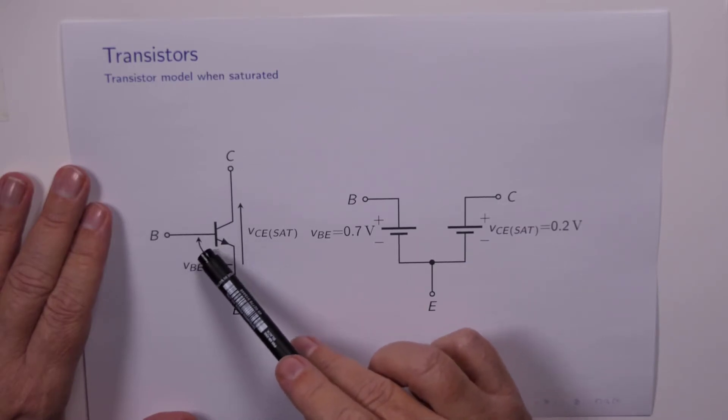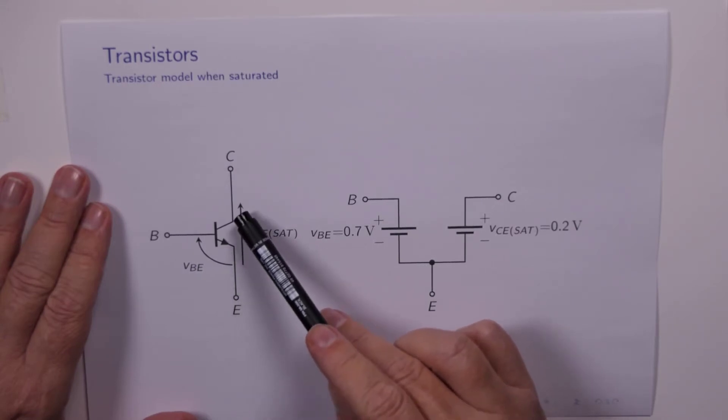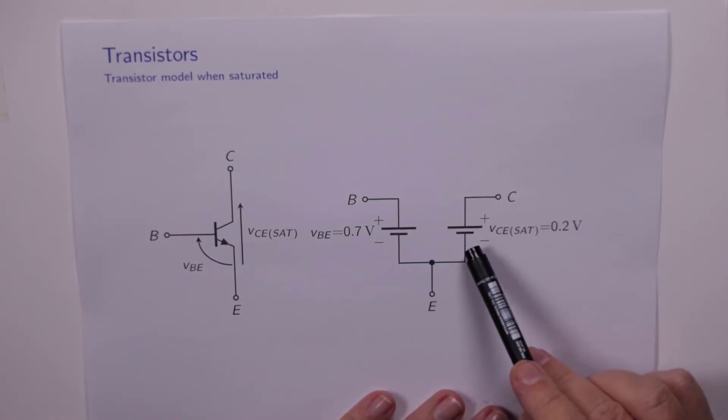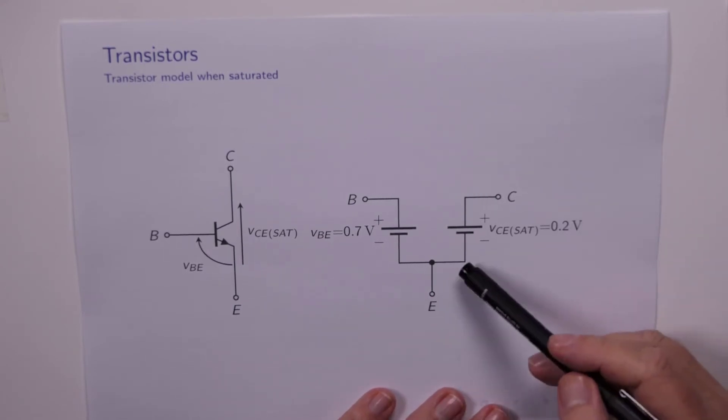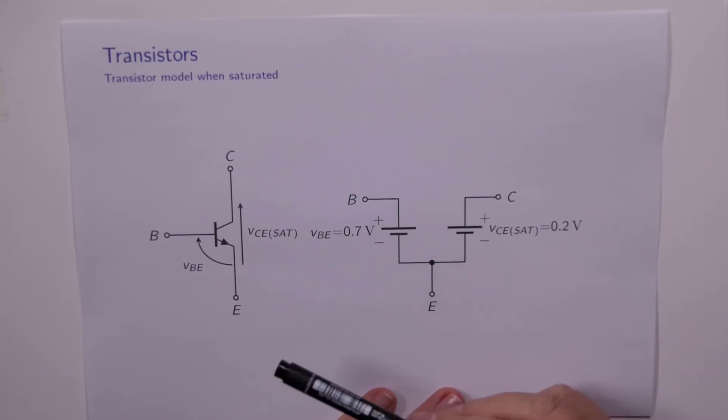So it looks like there's a simple battery between the base and the emitter voltage and a simple battery between the collector and the emitter terminals. And so we have a 0.7 volt battery there and a 0.2 volt battery there. And we can all solve circuits involving a few batteries.